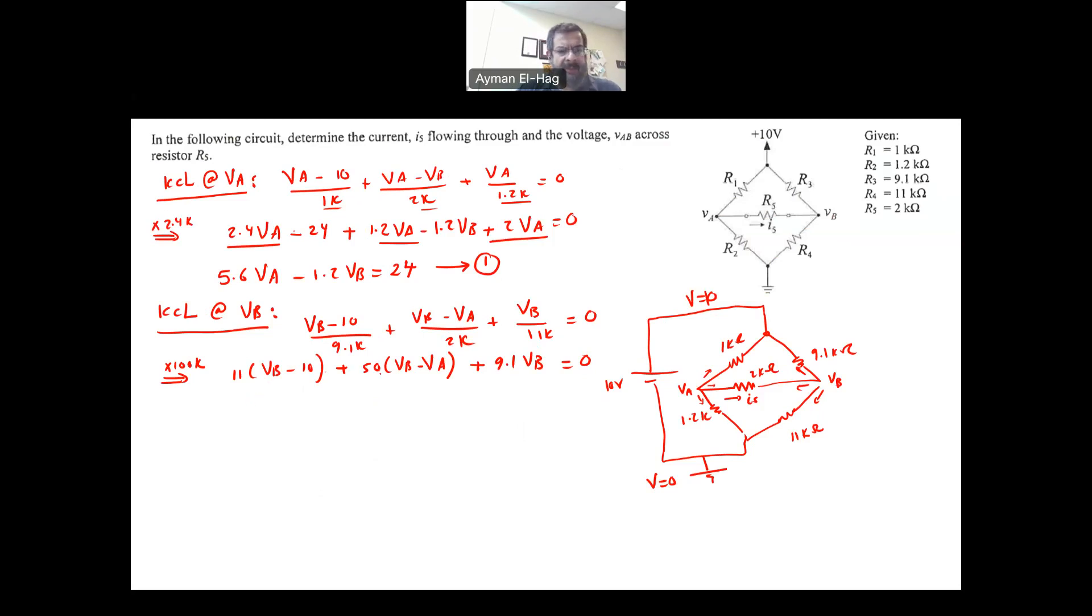So if we collect terms for VA, we will have -50VA. For VB, we have 11, we have 50, we have 9.1, so +70.1VB, and this equals 110. This is my second equation. We have two equations, two unknowns, we can solve them. So solving equations 1 and 2, then you will find that your VA is approximately equal to 5.4557 volts, and your VB is approximately equal to 5.46 volts.